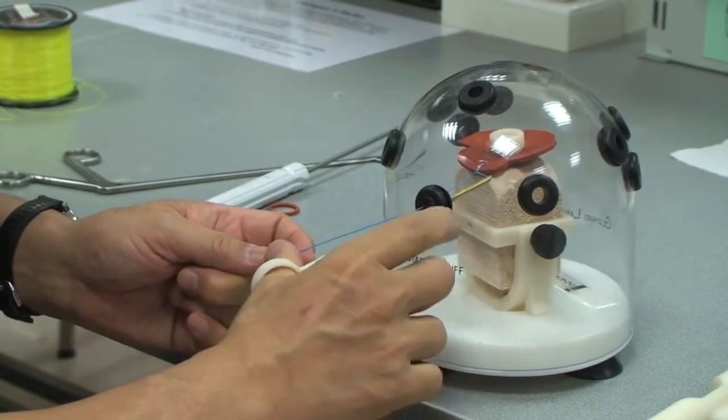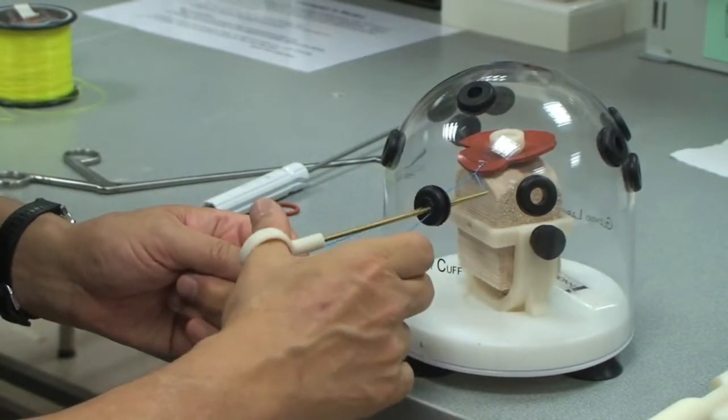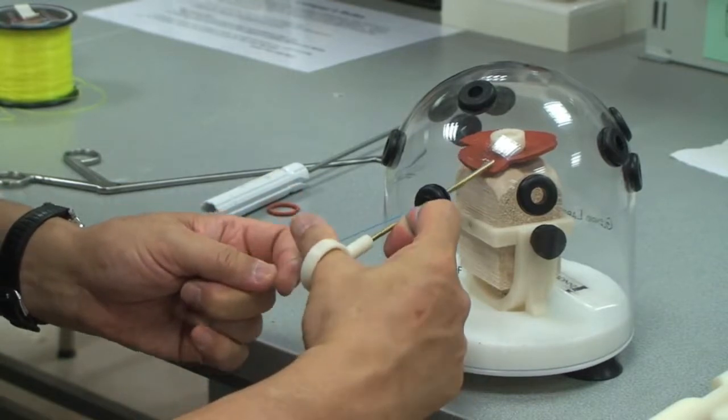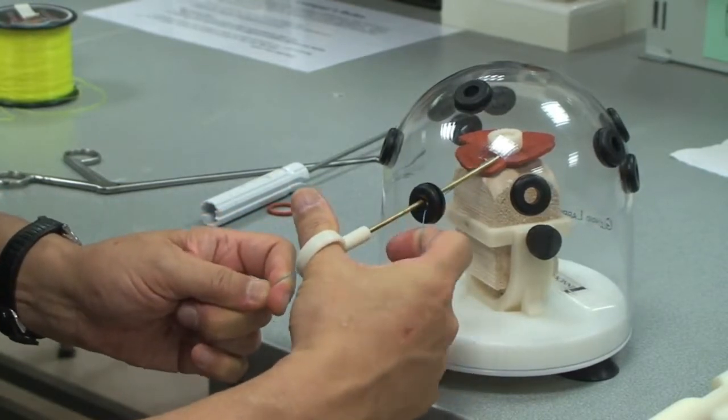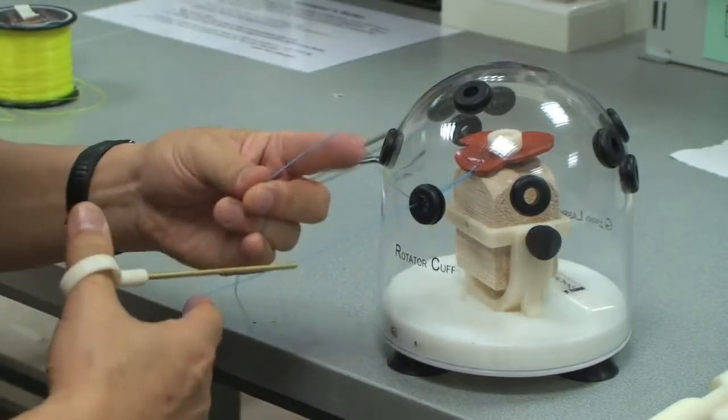Now, if you want to get a good grip of the suture, you can wrap your finger around that to give you extra friction to get a tighter grip. Pull that out. I repeat the same thing.